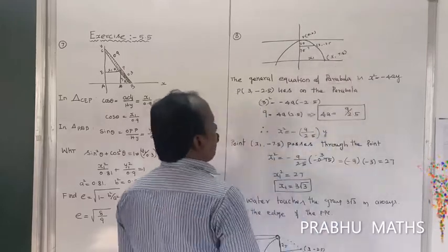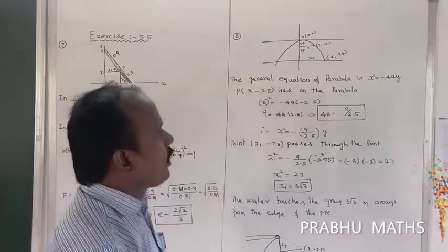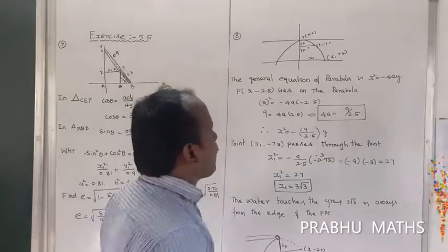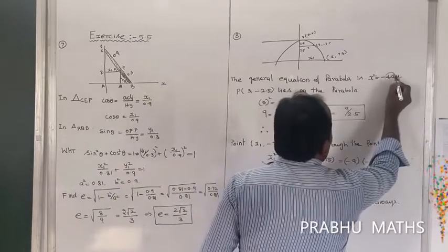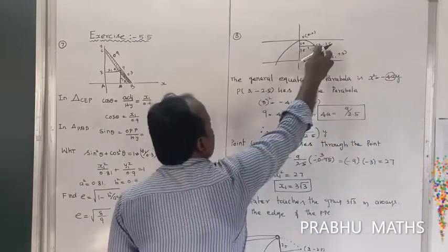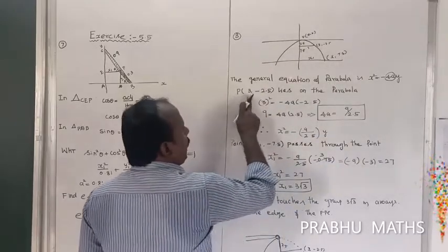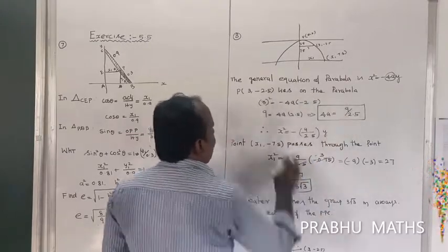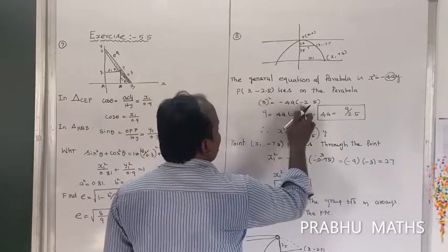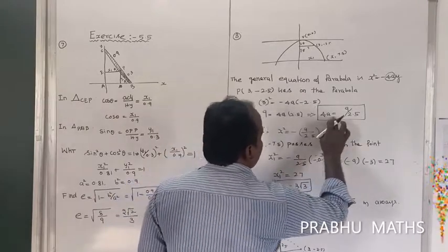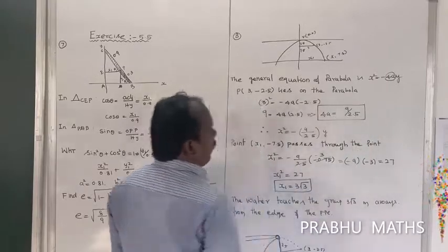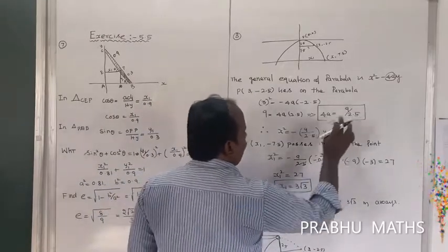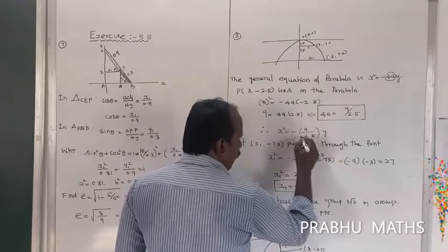The general equation of a downward-opening parabola is x² = -4ay. The parabola passes through the point (3, -2.5). Substituting: 3² = -4a(-2.5), so 9 = 10a, giving 4a = 9/2.5. Therefore the equation is x² = -(9/2.5)y.